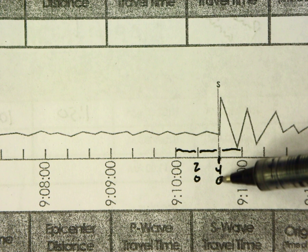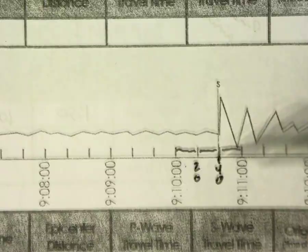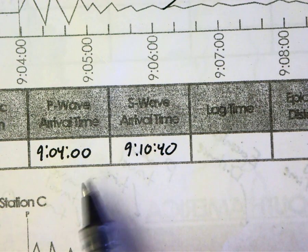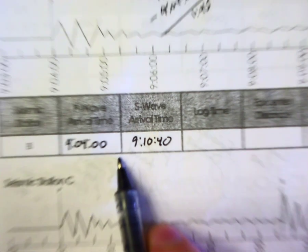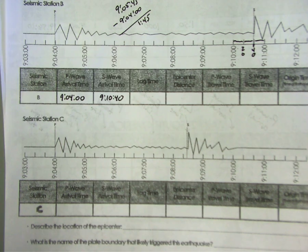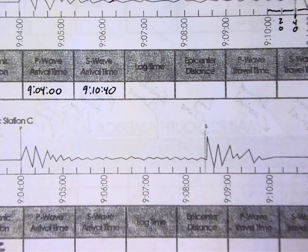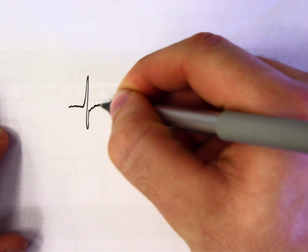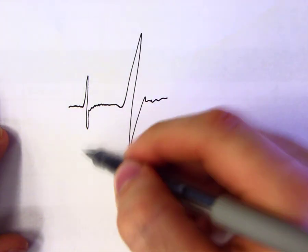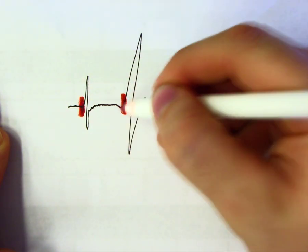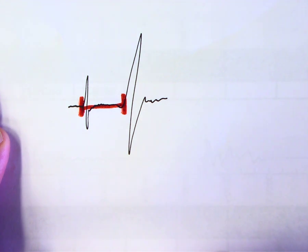Now we have both times. Lag time is the difference between when the P wave arrives and when the S wave arrives. If you picture a seismogram, the P wave appears first, then the S waves come in a little bigger. The distance in time between the P wave and the S wave is your lag time. It basically tells you how far away the earthquake is — in this case the P wave arrived at 9:04 and the S wave at 9:10:40.